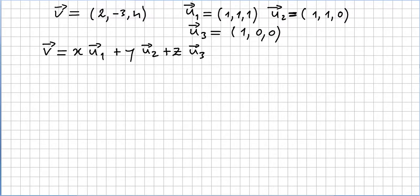This video is on the course of linear algebra and we are still introducing vectors in the vector space. We are now on linear combinations — please check the previous video for that. We want to know if vector V can be written as a linear combination of some given vectors.